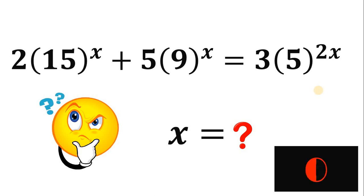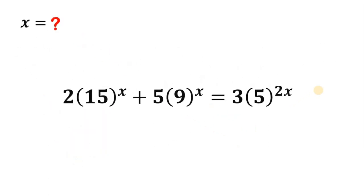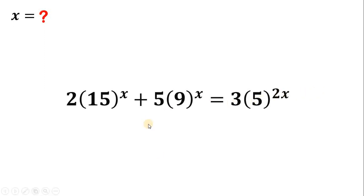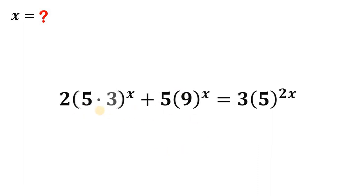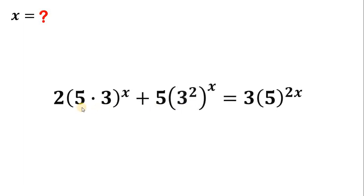Now, let's answer this question together. One way to answer this is to realize that 15 can be written as 3 times 5. Why do we do that? Because take note that 9 is just 3 squared. So we have 5 times 3, we have 3 squared, and we have 5 raised to something else.